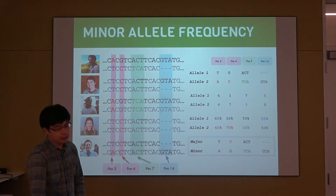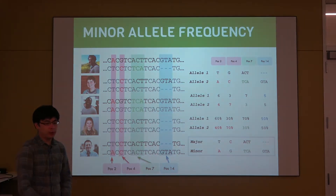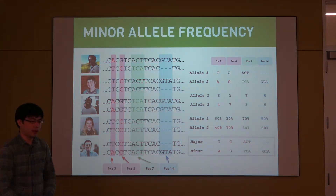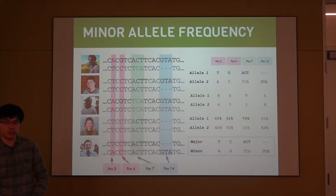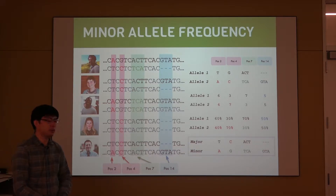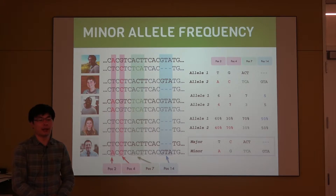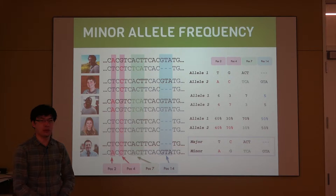As I was explaining with this toy example, the major allele has a T at position two, has a frequency of 60%, and the minor allele has a frequency of 40%, meaning that this is a relatively common SNP — the allele frequencies are relatively common regardless of which one you have.